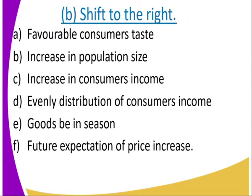Shift to the right — that is when demand will increase. Number one: favorable consumer tastes. Number two: increase in population size. Number three: increase in consumers' income. Number four: redistribution of consumers' income. Number five: goods being in season. Number six: future expectation of a price increase.